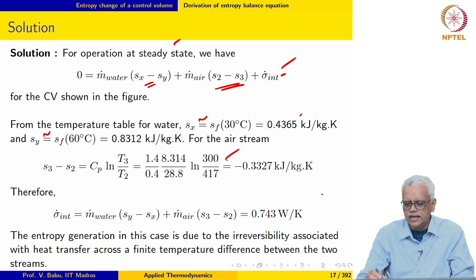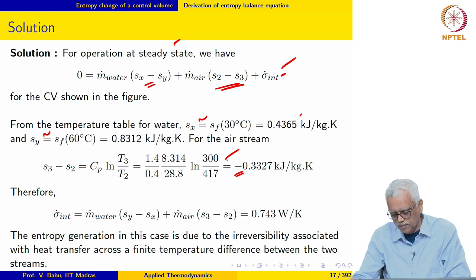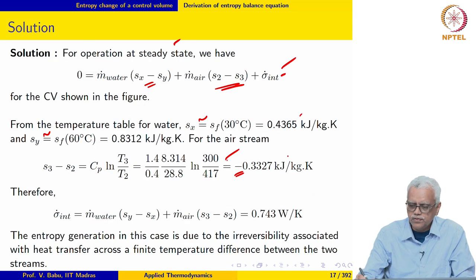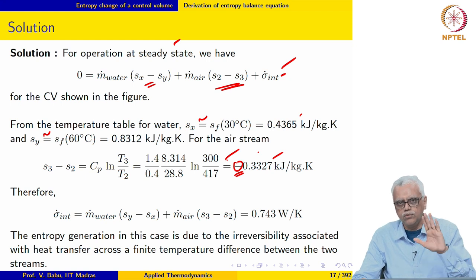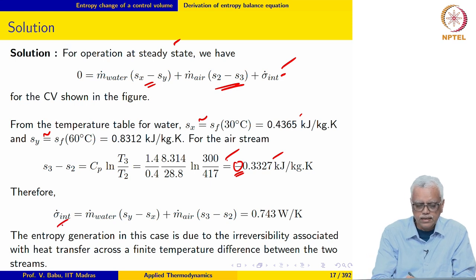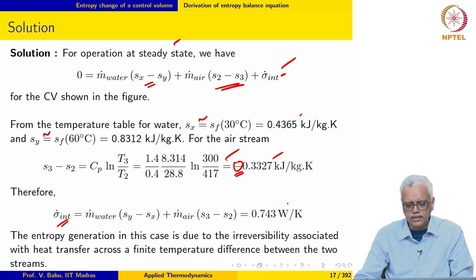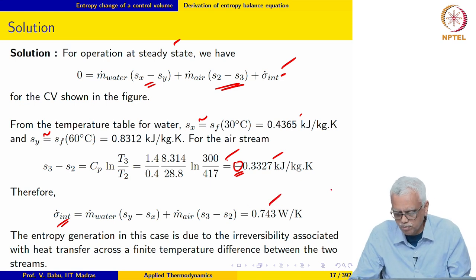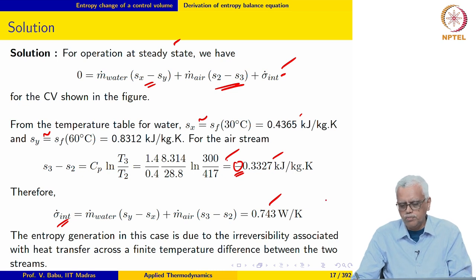Since the air is cooled from 417 K to 300 K, the specific entropy of the air decreases, as the negative sign shows — a consistency check. Calculating σ̇_int for the entire heat exchanger gives a positive value of 0.743 W/K, as it should be.